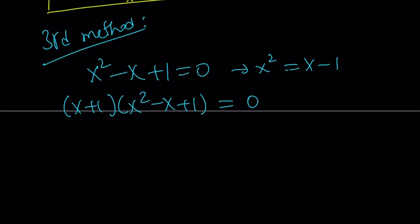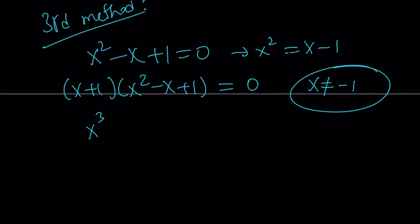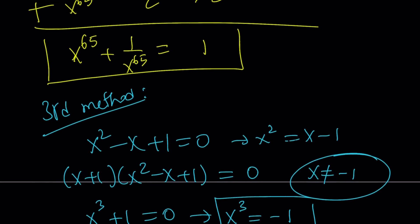But notice that I'm multiplying by something extra. So I don't want to bring an extraneous root. So I want to make sure I take note that x does not equal negative 1. I'll pay attention to that, hopefully. So from here, we get x cubed plus 1 equals 0 from sum of 2 cubes formula, which means x cubed can be written as negative 1. This is a huge improvement over x squared equals x minus 1. Because in the first method, remember, we had to keep squaring to get to the 64th power. But this time, we're going to get there much faster.